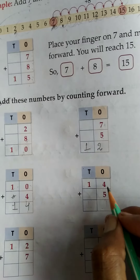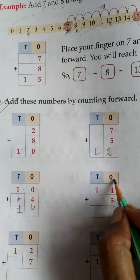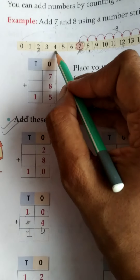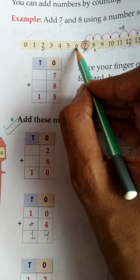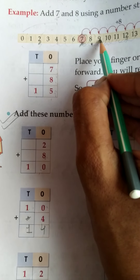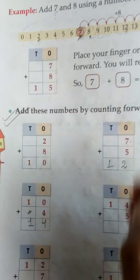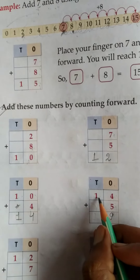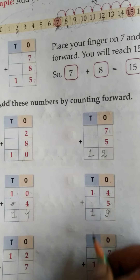Next: 14 plus 5. Firstly solve the ones position: 4 plus 5. This is 4, then take 5 steps forward: 1, 2, 3, 4, 5. At which number are you? 9. So write 4 plus 5 = 9, and tens digit stays 1. The answer is 19.